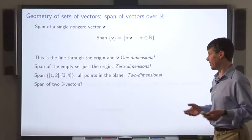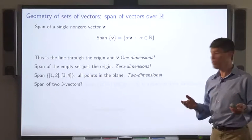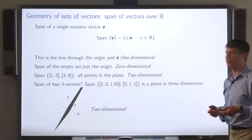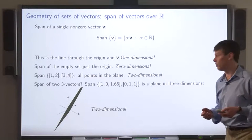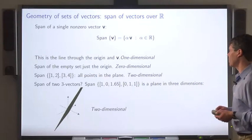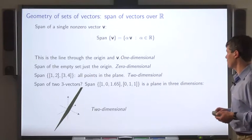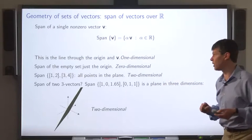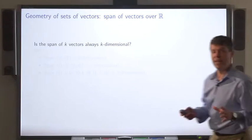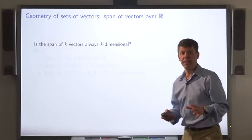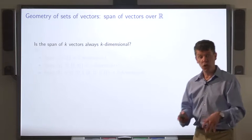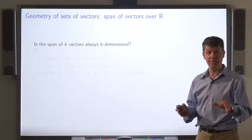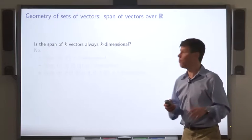What about the span of three vectors? Similarly, that's a plane in three dimensions — a two-dimensional object. This raises the question: is the span of k vectors always a k-dimensional geometric object? The answer is no.